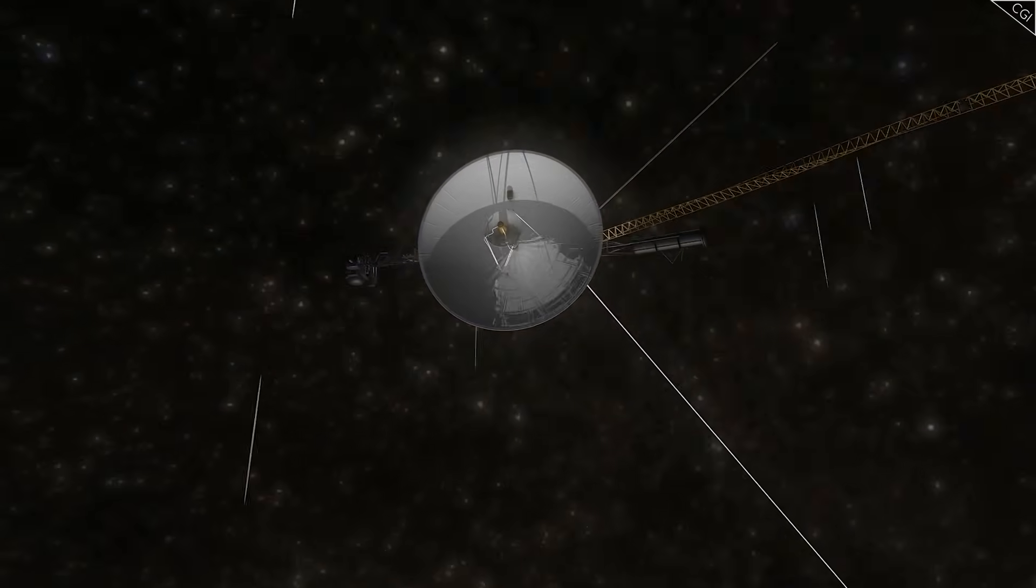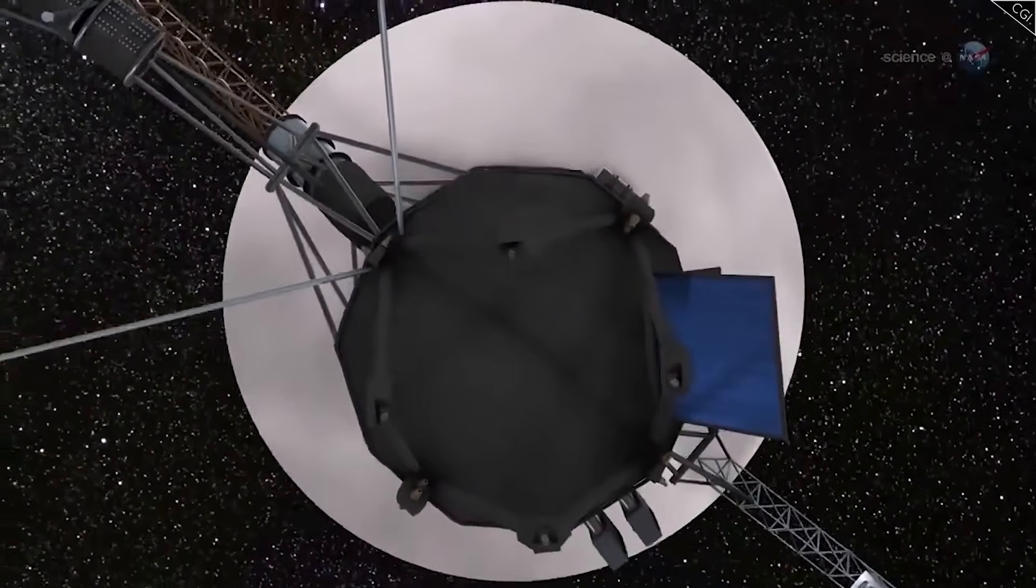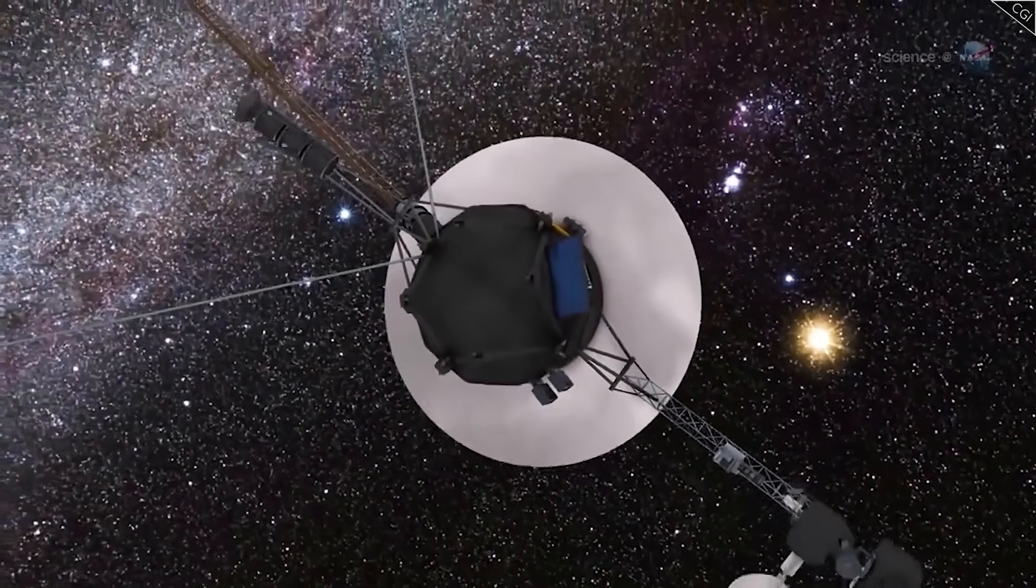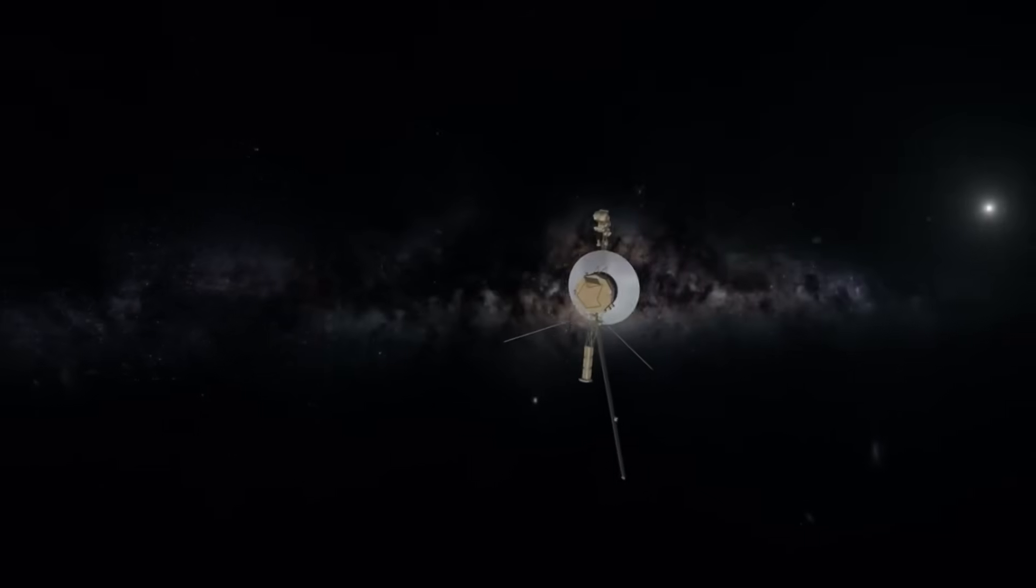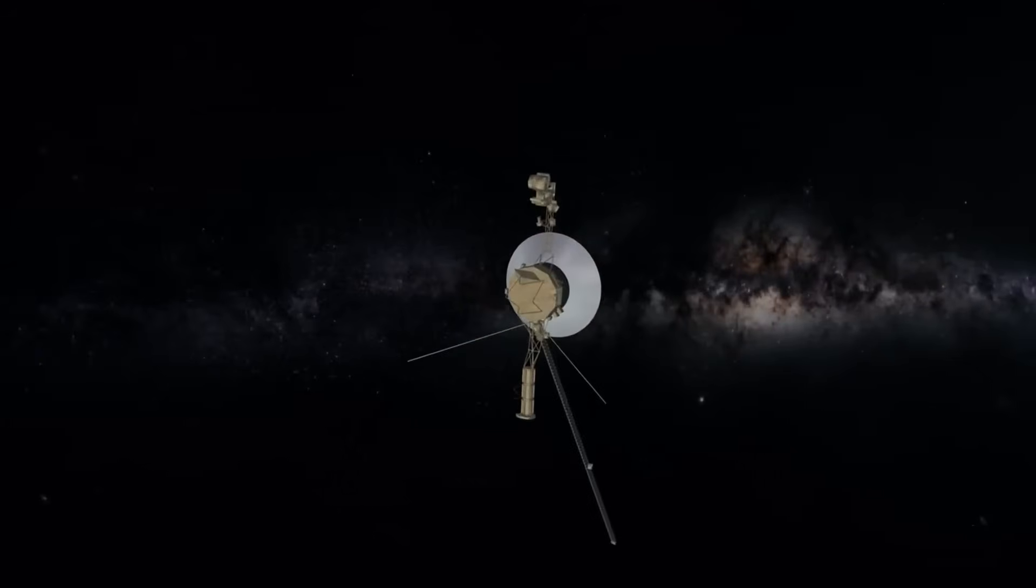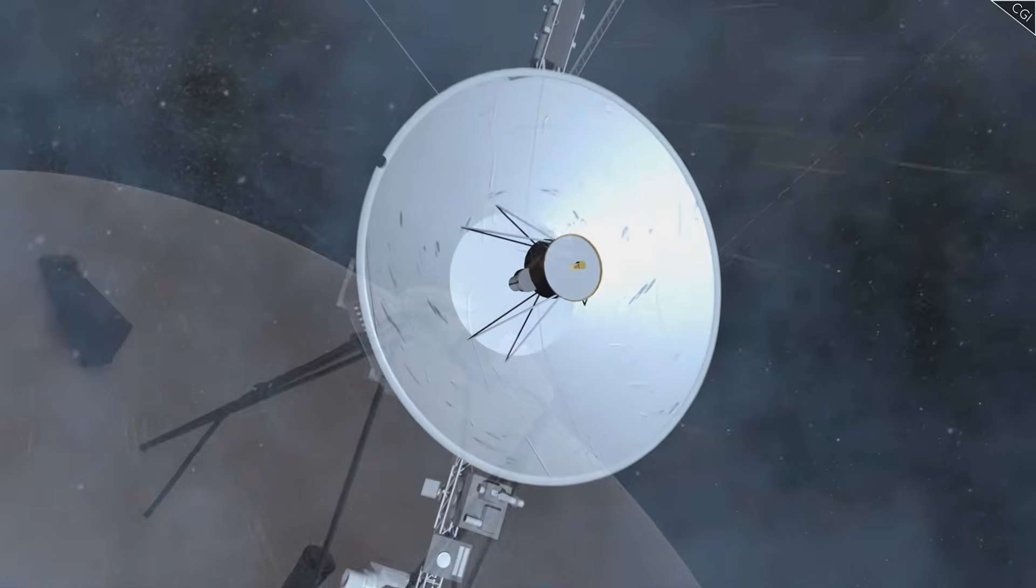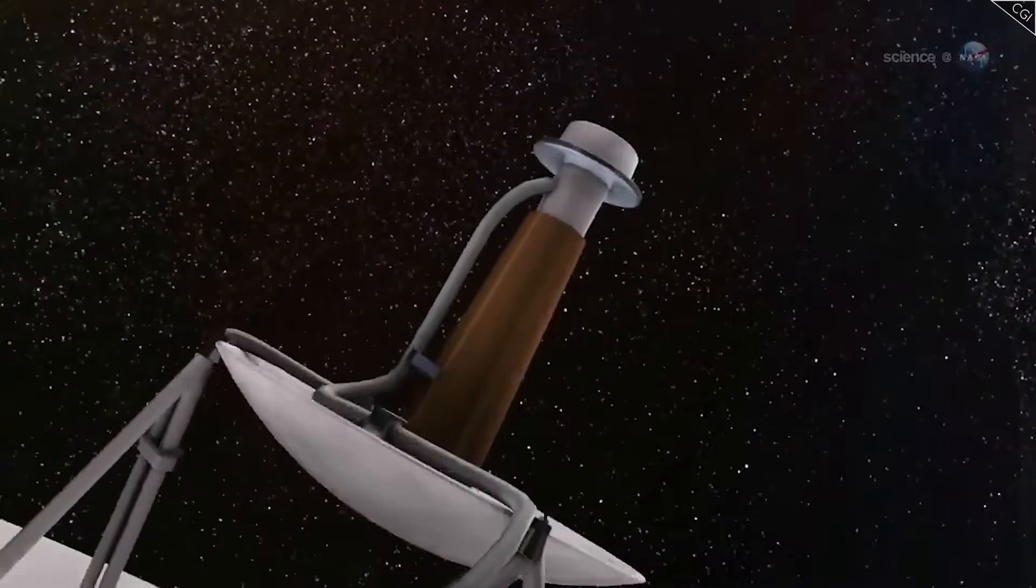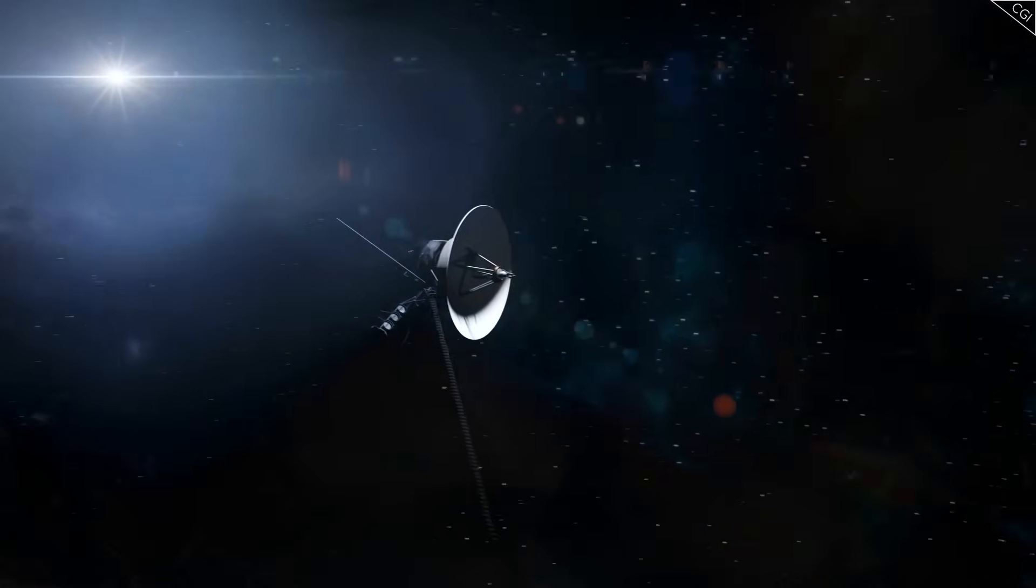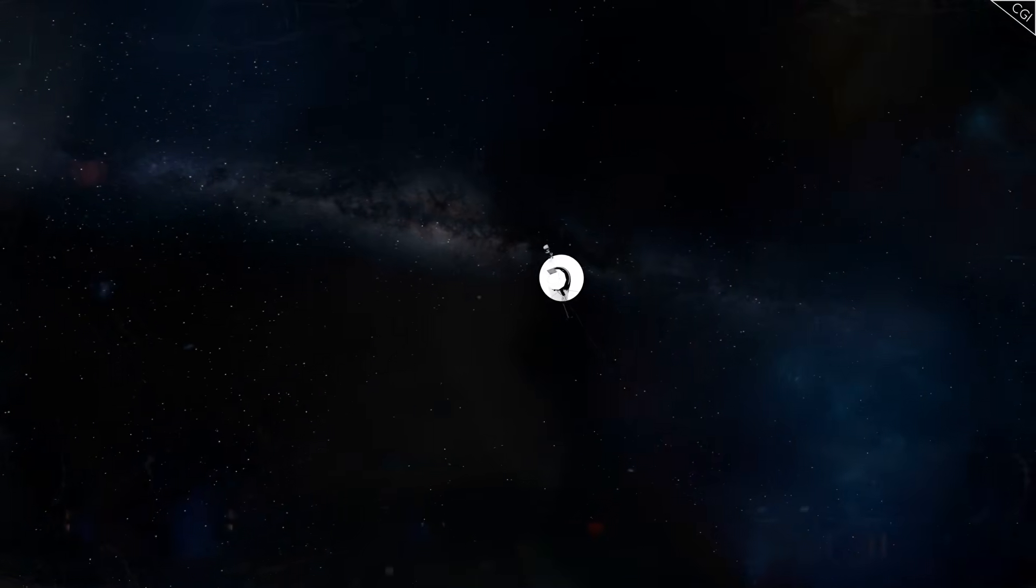Voyager 1, though no longer equipped with propulsion, still carries gyroscopes and antenna alignment systems that allow engineers to slightly adjust its orientation. But on August 1st, 2025, multiple amateur space tracking communities reported an unexpected shift in Voyager 1's telemetry data. Somehow, the probe had changed its transmission vector, reorienting toward a position that didn't match its last known navigational instructions. The change was subtle, no more than a few degrees. But in deep space, that kind of movement is monumental.